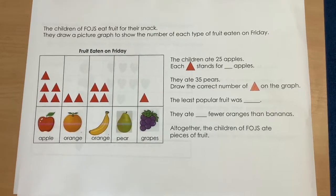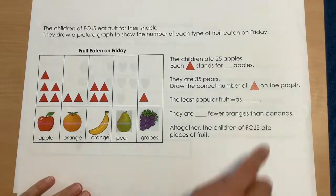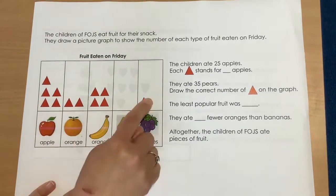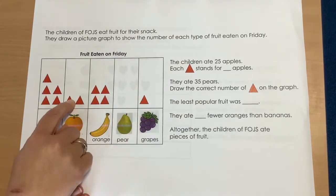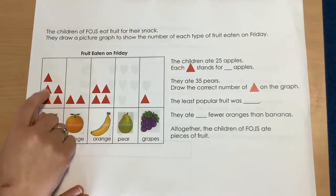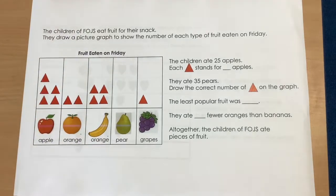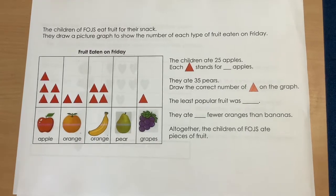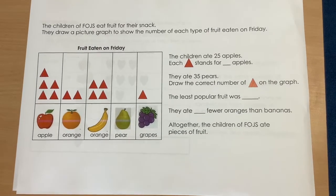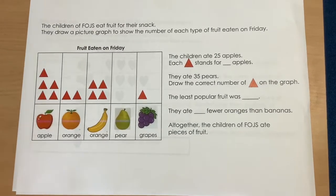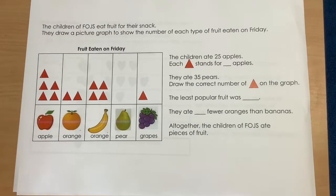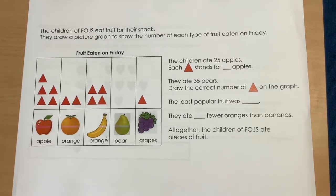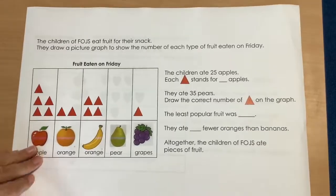And altogether, the children of Fair Oak Junior School ate how many pieces of fruit? We count up all the triangles: we had 7 for pears, then counting the rest gives us 19 triangles in total. We need to multiply that by 5. Some of you may know 5 times 19 mentally, or you might do 5 times 20 which is 100, and take away 5, which leaves you with 95. However you managed to do that mentally, well done.